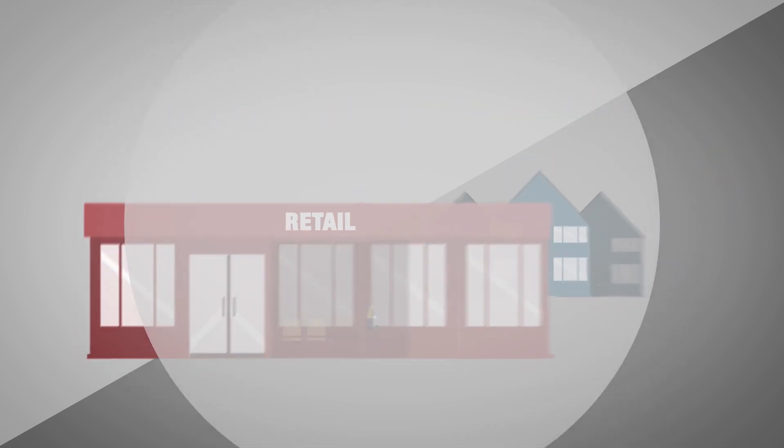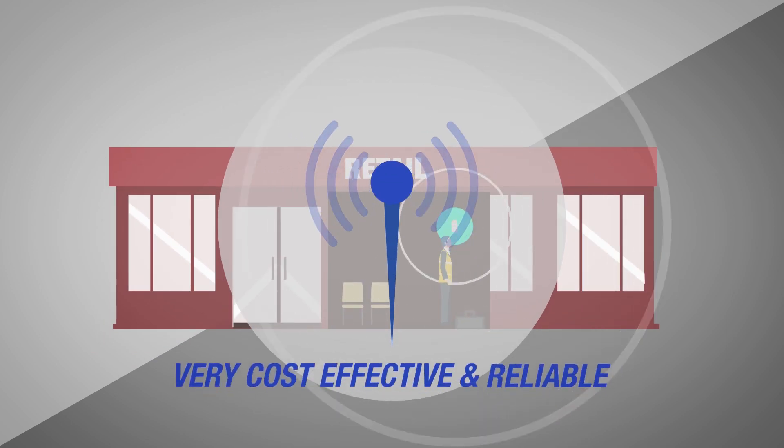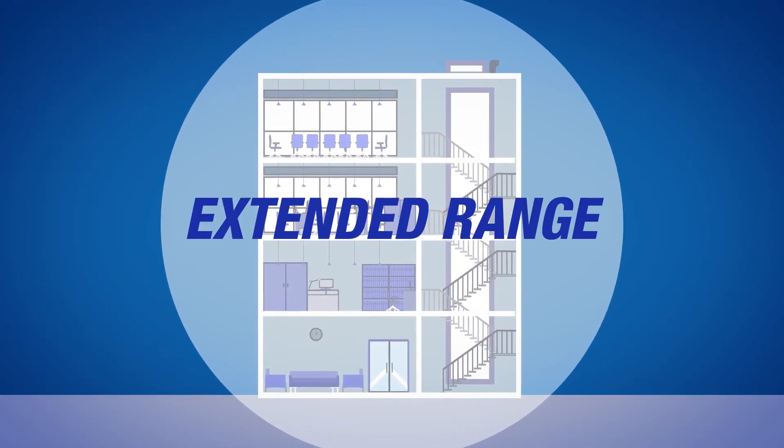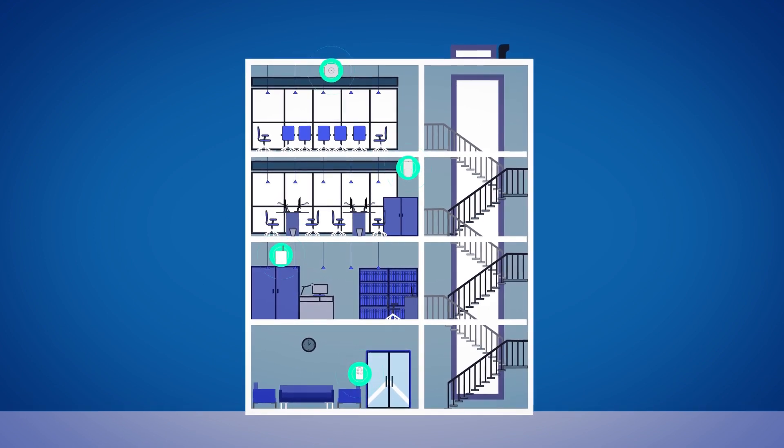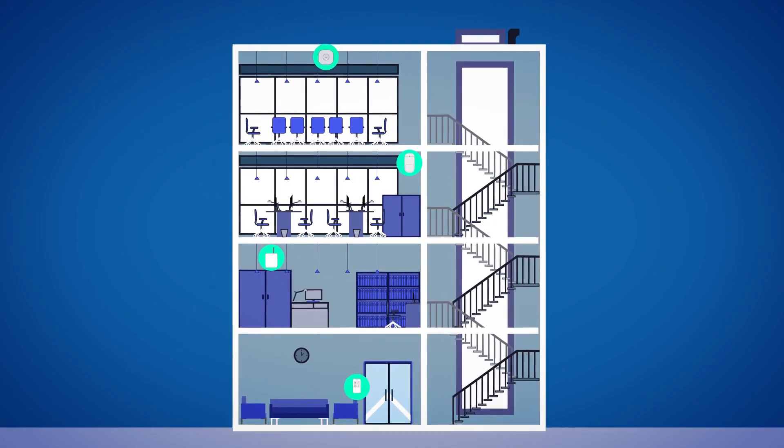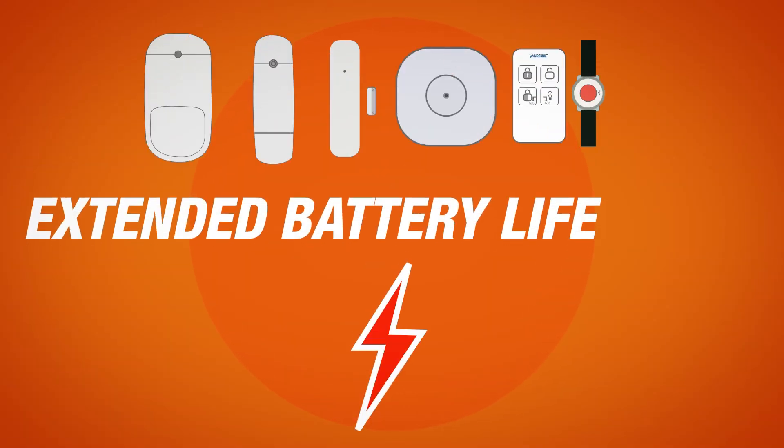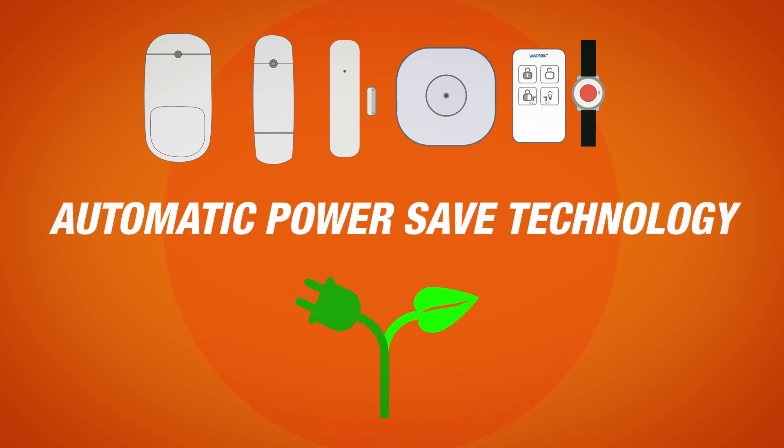The two-way wireless technology is very cost effective and reliable. Extended range SPC Wireless has an impressive range so fewer wireless detectors can protect a whole building. Extended battery life of five years as well as APS or automatic power safe technology.